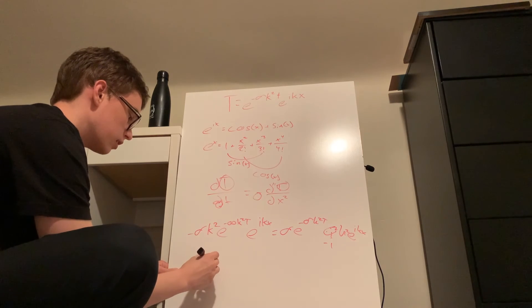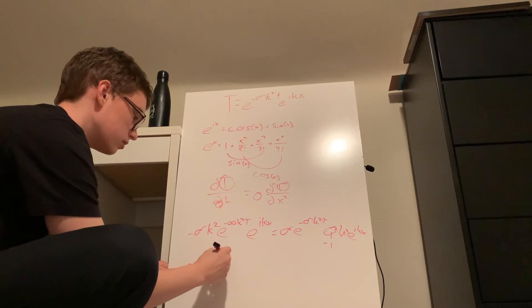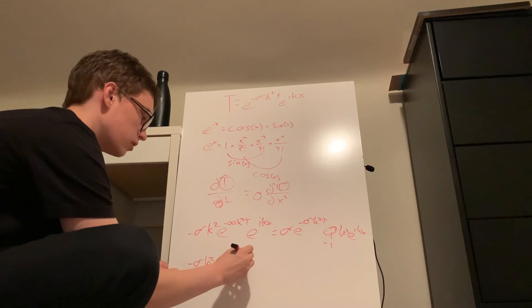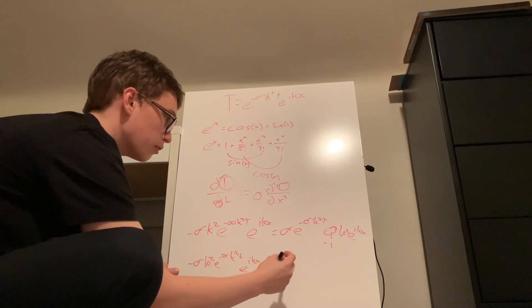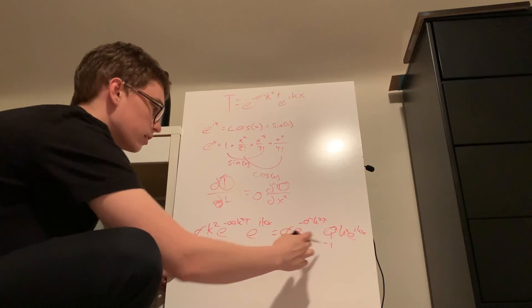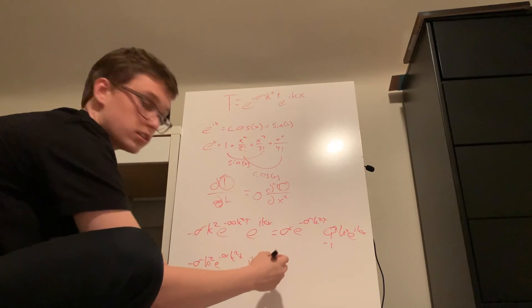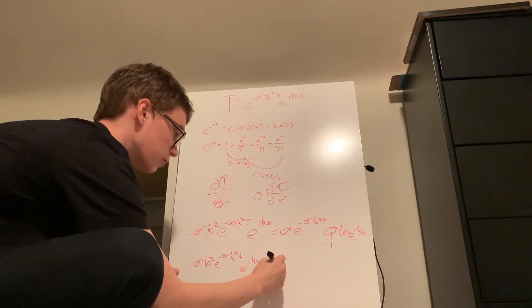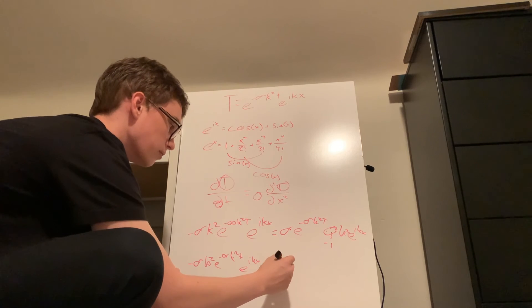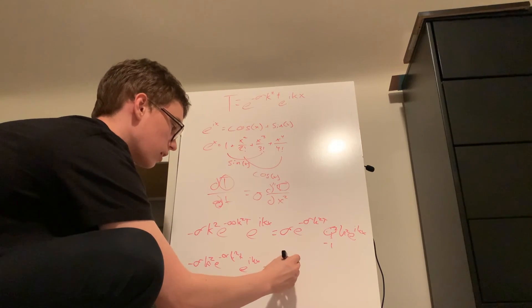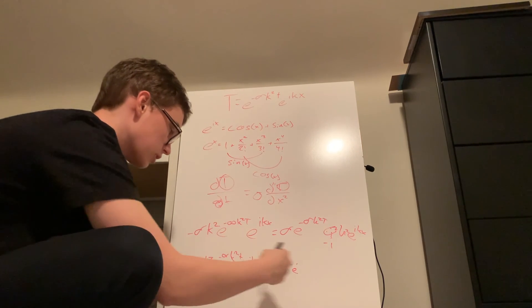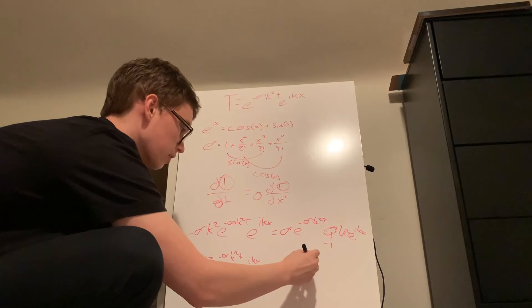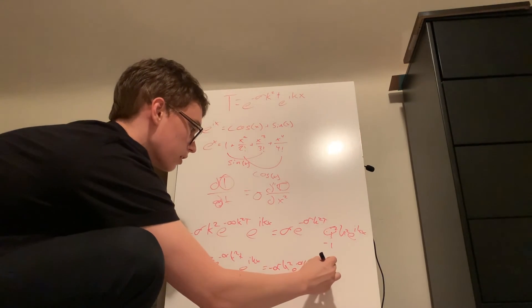So we have our alpha k squared e, negative alpha k squared t, e to the ikx. And then, if you notice, we have our k squared and our negative one, and we can move that to the front. So we get negative alpha k squared e. And you might be noticing that essentially we have the same thing on both sides. So k squared t, and then e to the ikx.